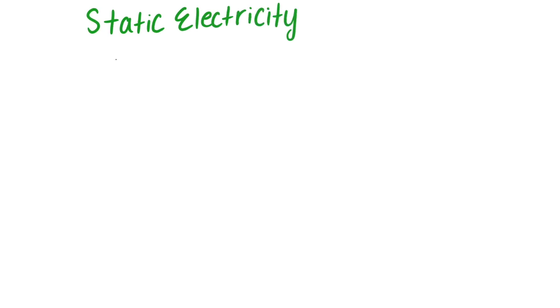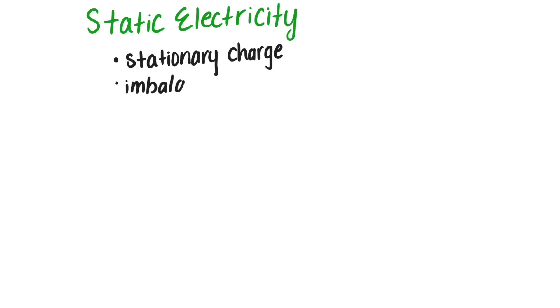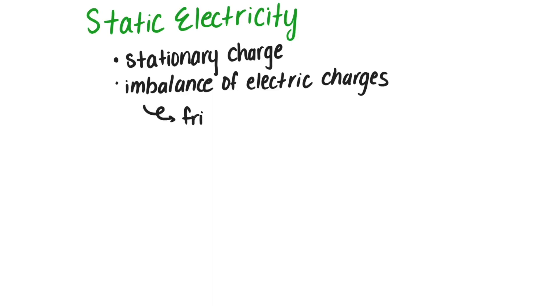Sometimes electricity can be accidentally generated. For example, static electricity. Static electricity is a stationary charge, meaning that it is a charge that is not moving and does not generate any current. It's generated when a surface or material has an imbalance of electric charges, usually from friction, and this charge will stay there until it has a chance to move to a different place.